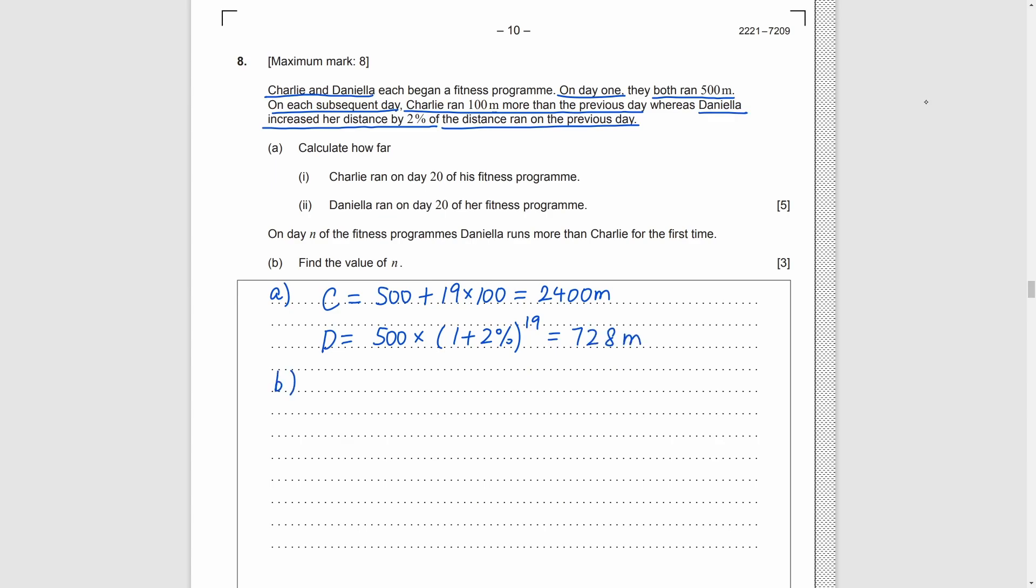Part B, on day N, D runs more than C for the first time. And we need to find N. As D runs more than C, we set the general formula of D is greater than C. And then, we just need to graph two expressions in the calculator. Or, just by the function of the calculator, we can get N is greater than 184 something. So, N is equal to 185.